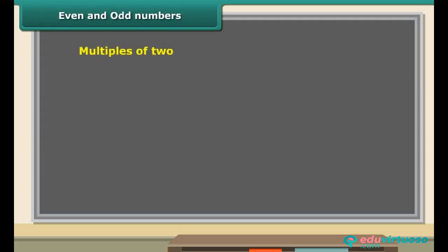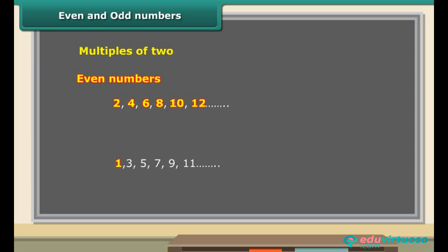Do you observe any pattern in the numbers 2, 4, 6, 8, 10, 12 and so on? You will find that each of them is a multiple of 2. The numbers which are multiples of 2 are known as even numbers. The rest of the numbers — 1, 3, 5, 7, 9, 11 and so on — are called odd numbers.